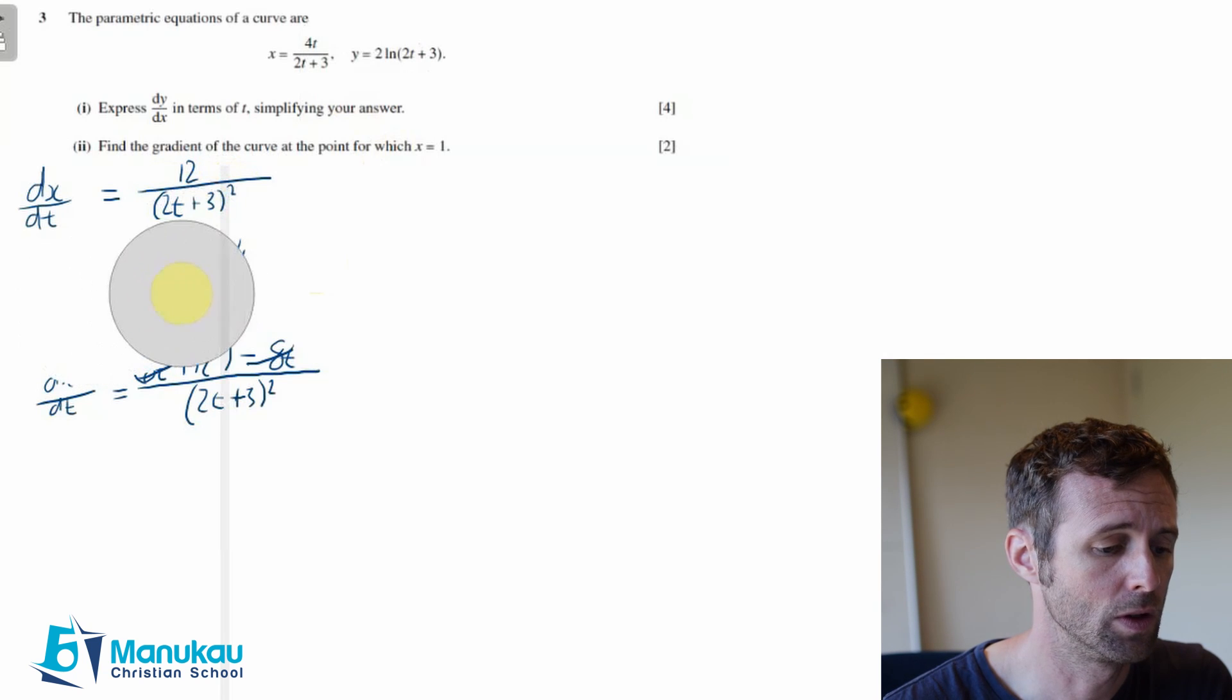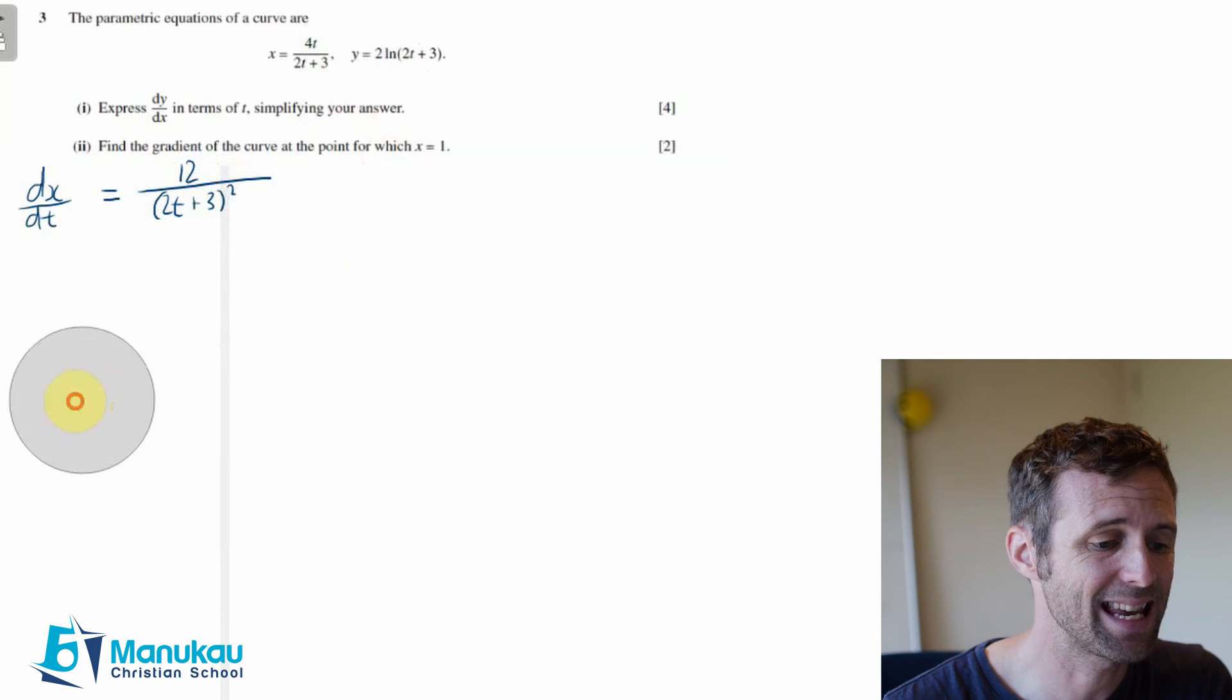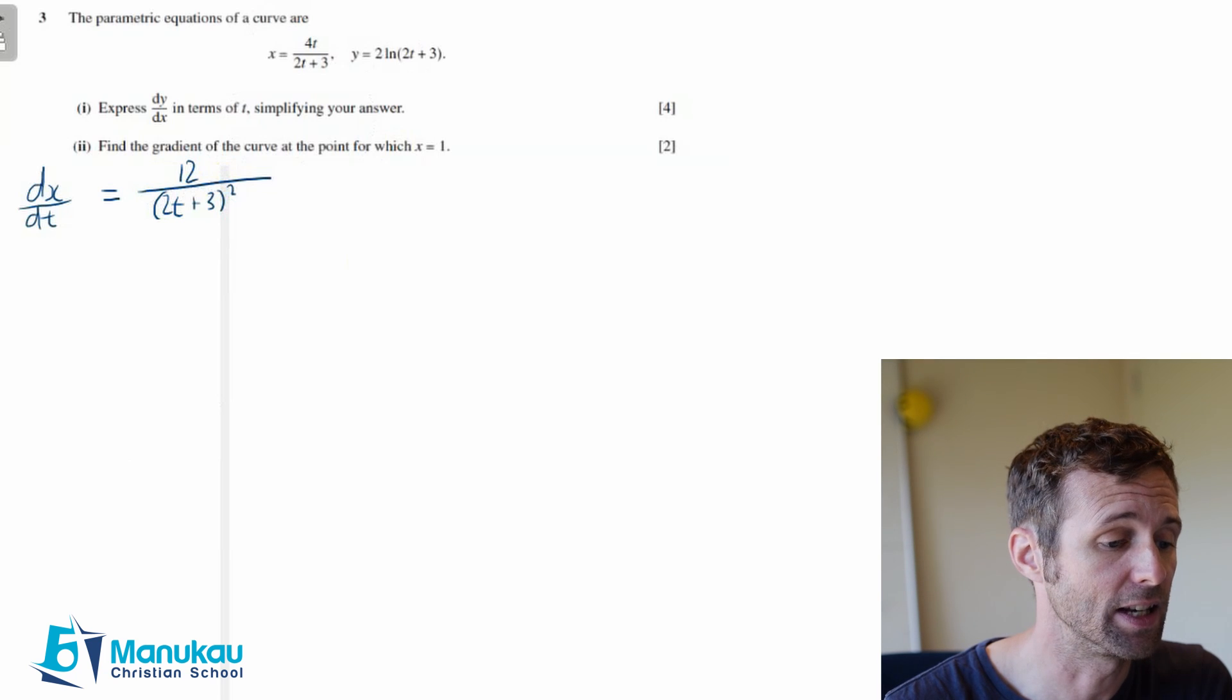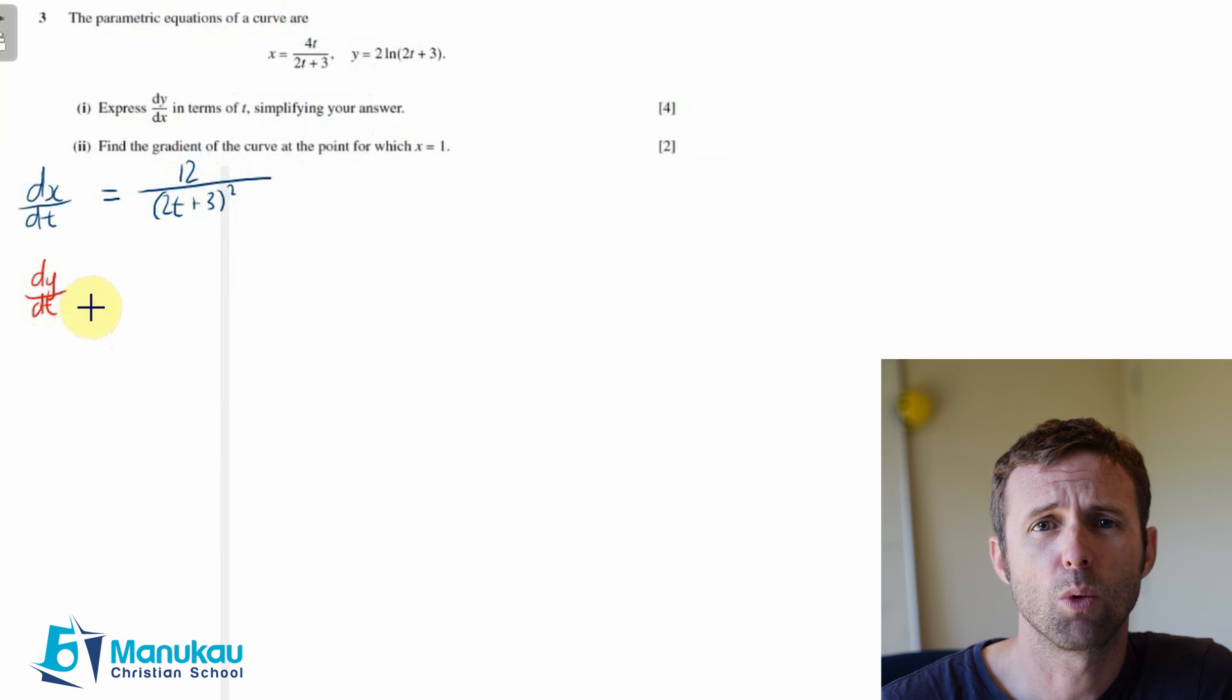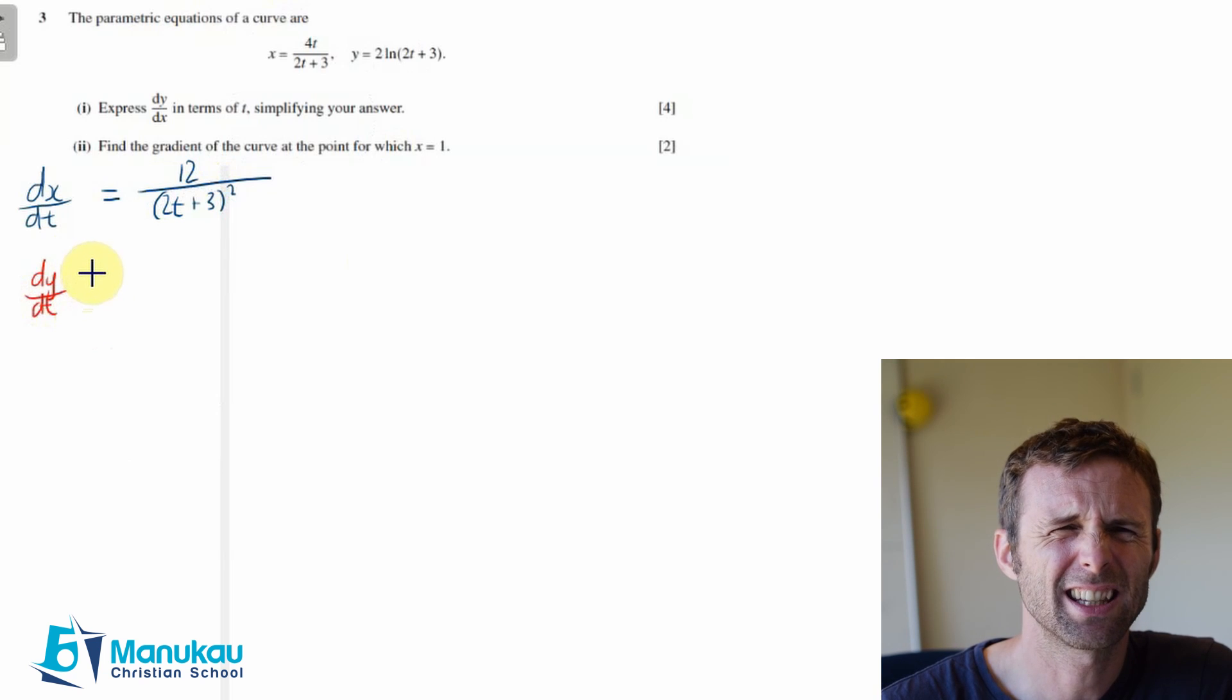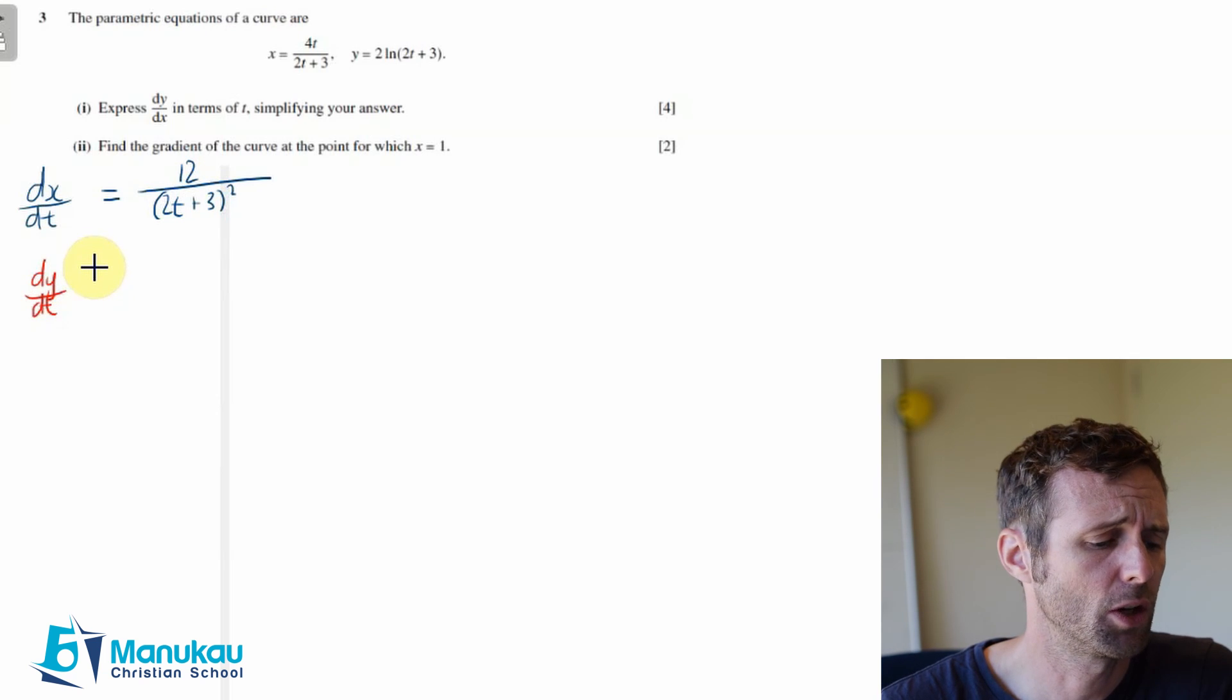Now let's think about how we're going to do dy/dt. I'll do this in red. For this you probably want to have a look at your textbook—I think it's exercise 4.2 off the top of my head.